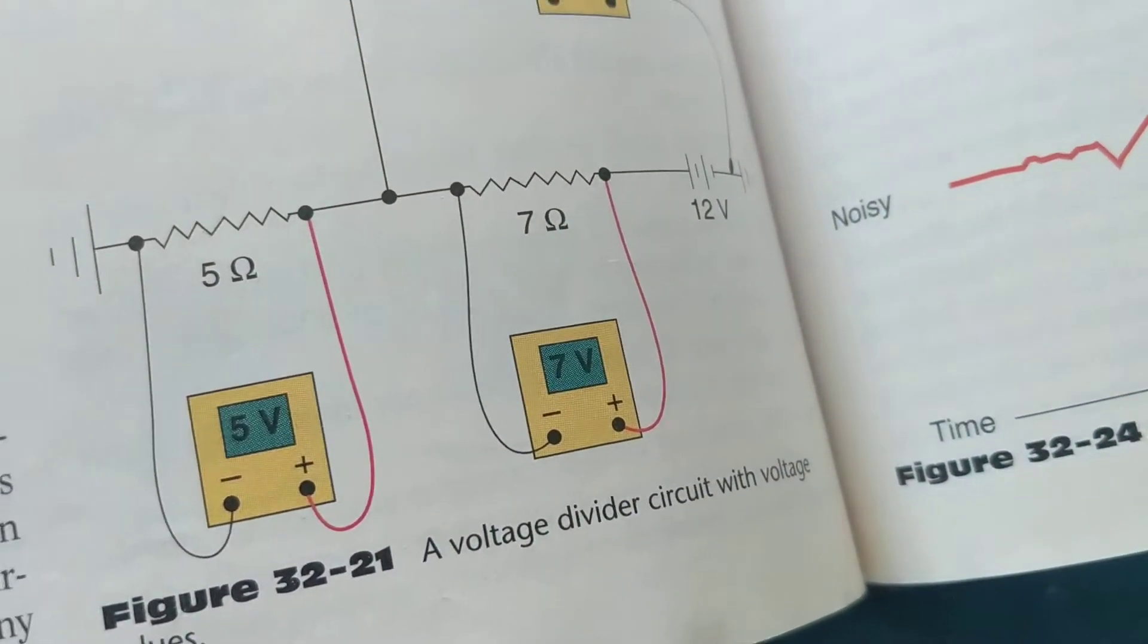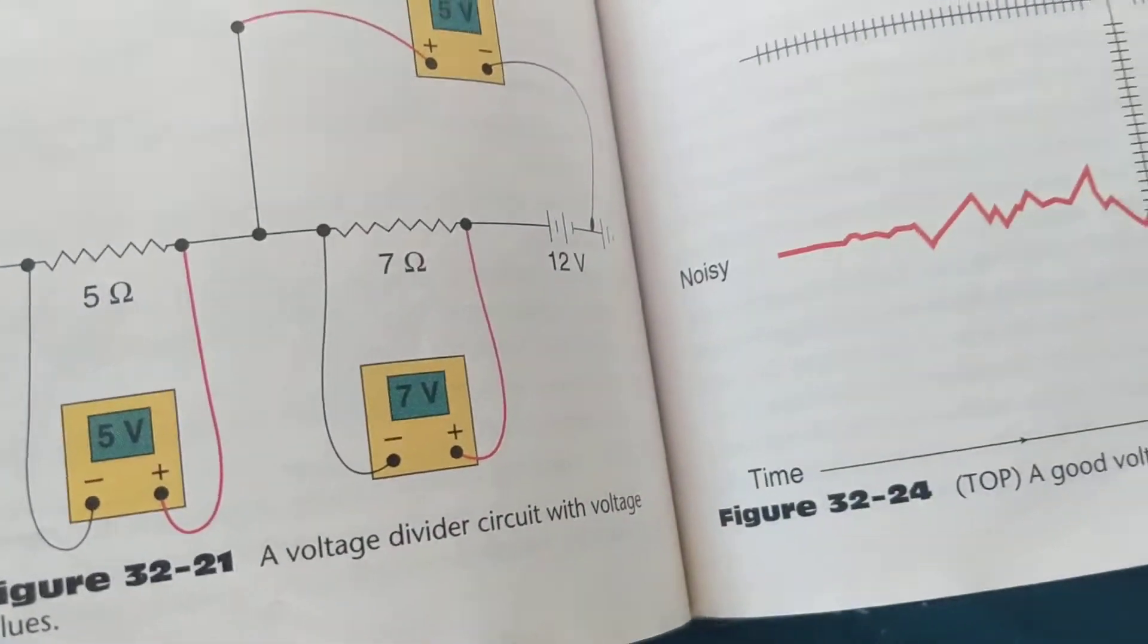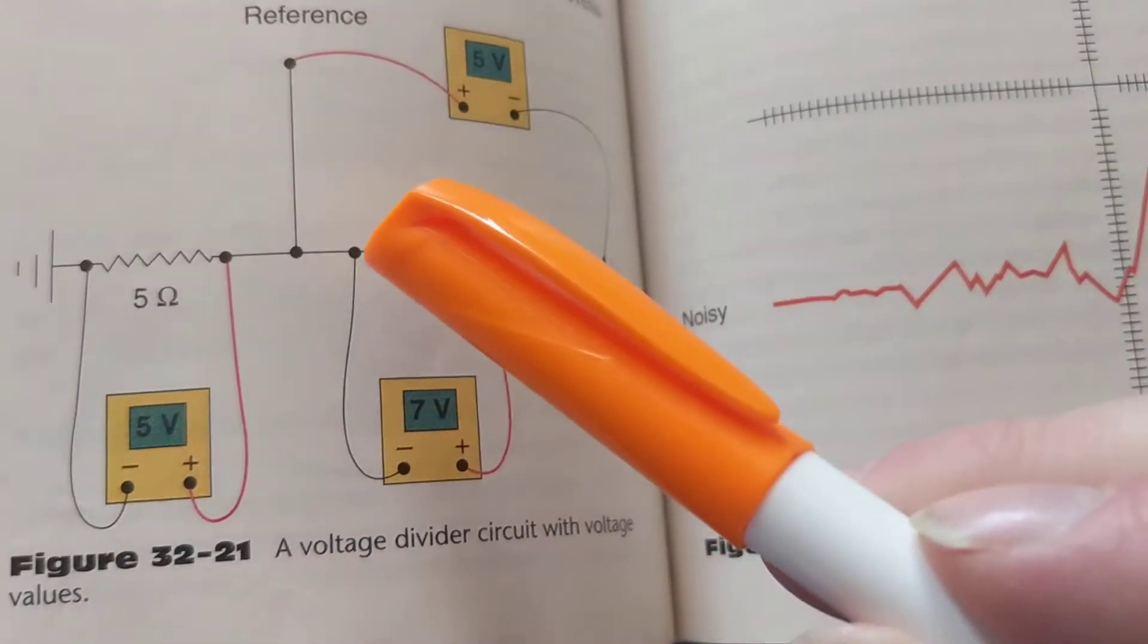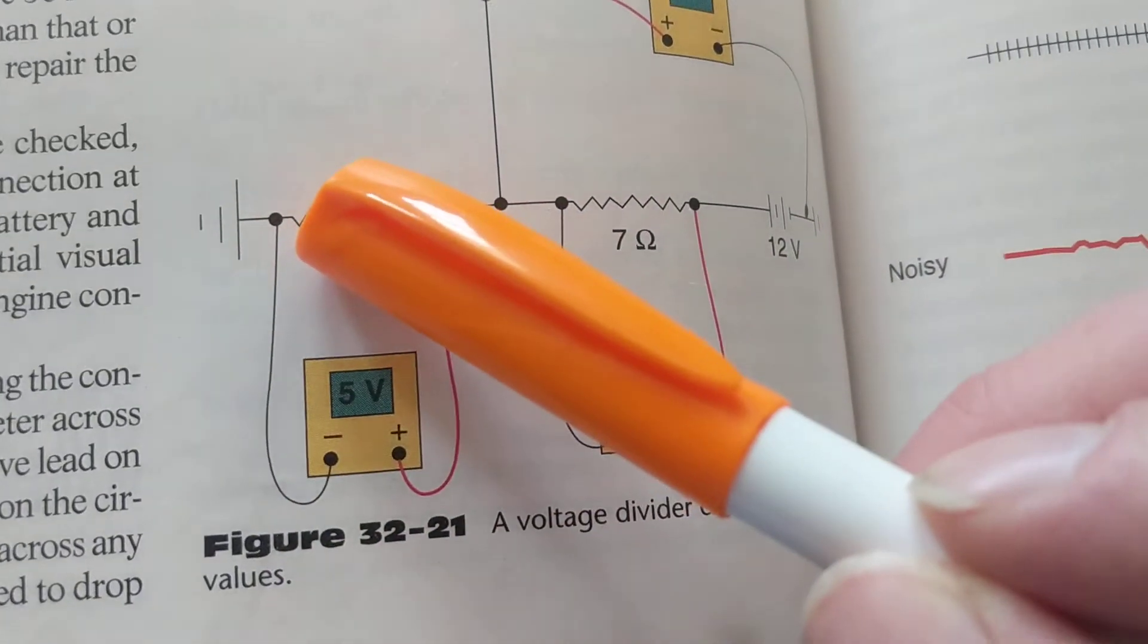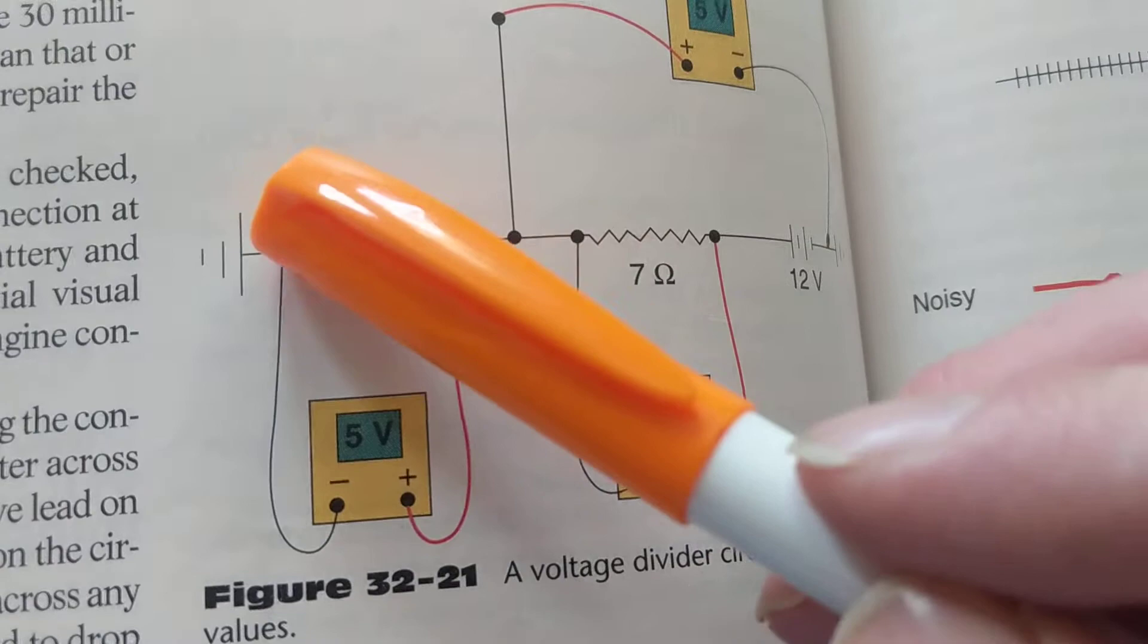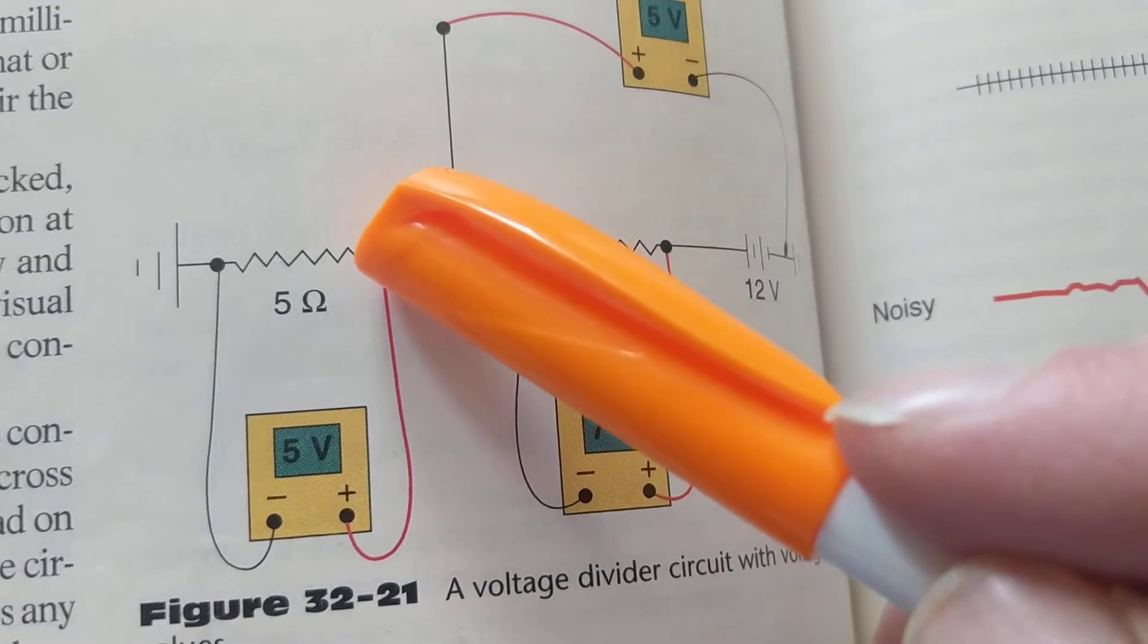If I go across the other one, you don't see there's no ground whatsoever from this meter. This is negative of the meter. The negative of this one goes to the ground. The positive goes to the other side.